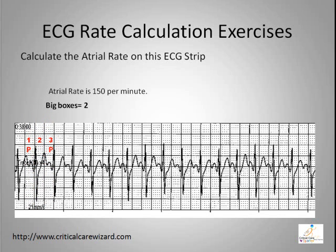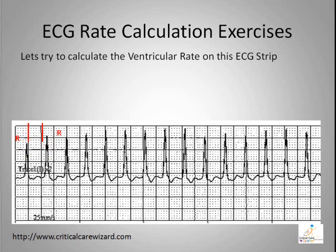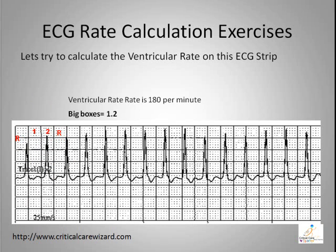Take note that the P-wave is located in between solid lines. To calculate the ventricular rate on this ECG strip, identify the first R-wave to the immediate next R-wave and mark it. The distance between R-waves is about 1.2 big boxes, so the ventricular rate is about 180 per minute.